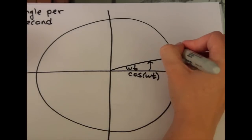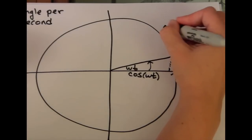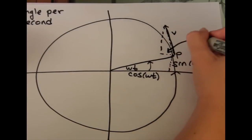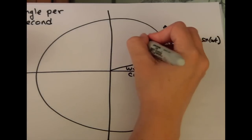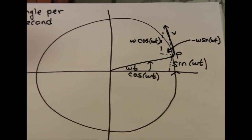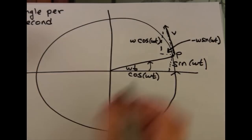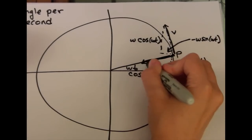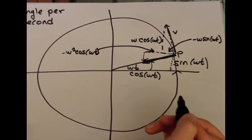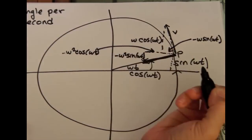Remember that the velocity with no strings attached faces tangent to the circle. Velocity measures how position changes with time. The x component of v has derivative minus omega times sine of omega t, and the y component of v has derivative omega times cosine of omega t. Notice how v and p are always perpendicular. The acceleration on the ball from the string's force measures how velocity changes in time, pointed in the direction of the string's force — so the ball accelerates into the middle of the circle. The x component is minus omega squared cosine of omega t, and the y component is minus omega squared sine of omega t.